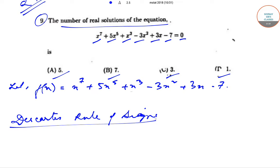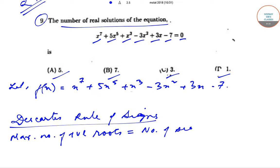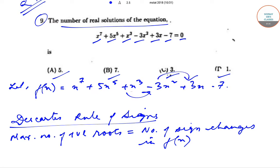For this, we have to check the maximum number of positive roots, which is given by the number of sign changes in f(x). As you can see, there is one change from x^3 to -3x^2, another change from -3x^2 to +3x, and another change from +3x to -7. So there are three sign changes in f(x).